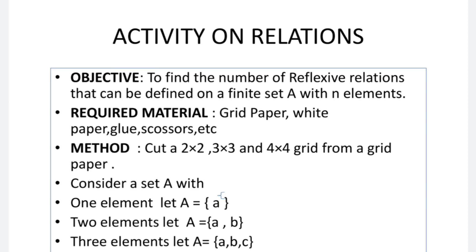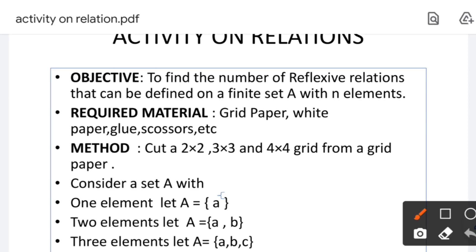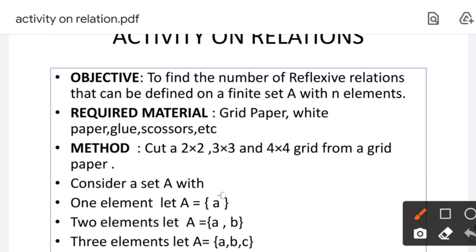Now children, let's start the activity. The objective of the activity is to find the number of reflexive relations that can be defined on a set A with N elements. The required materials are grid paper, white paper, glue — whatever you need. You can write, or instead of this, you can also make the grid on graph paper.